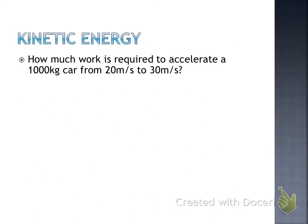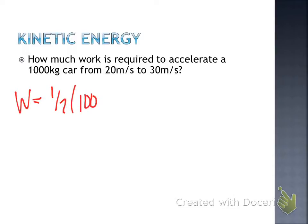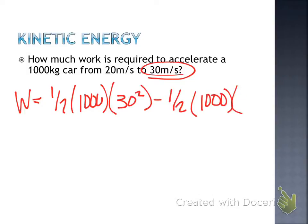How much work is required to accelerate a 1,000 kg car from 20 meters per second to 30 meters per second? Work equals ½m × v_final² minus ½m × v_initial²: ½ × 1,000 × 30² minus ½ × 1,000 × 20².